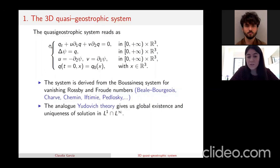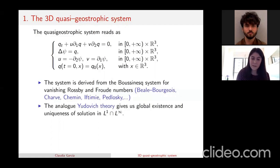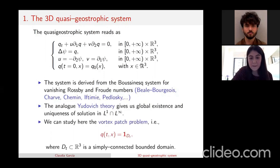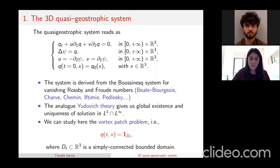We can get an analogue of Yudovich's theory here, giving global existence and unique solutions in L¹ and L∞ when the initial data is integrable and bounded. This allows us to study the classical vortex patch problem in the 2D Euler equations setting. For those unfamiliar, the idea is to consider that the solution q is the characteristic function of a domain D(t), and this domain is changing with time.